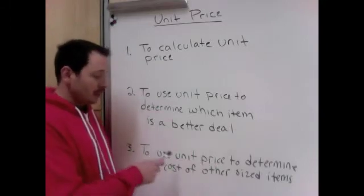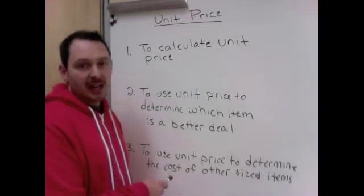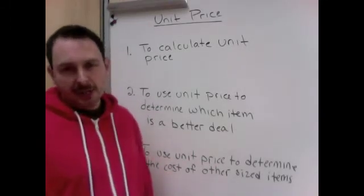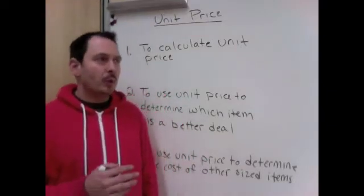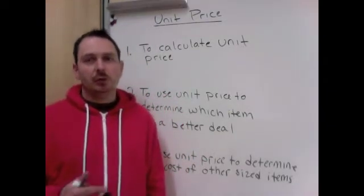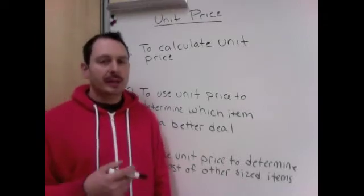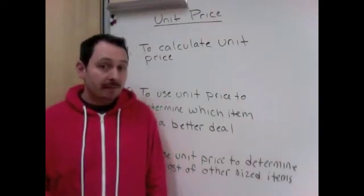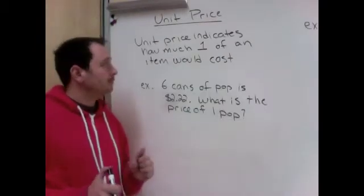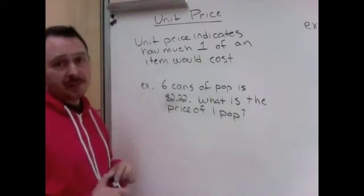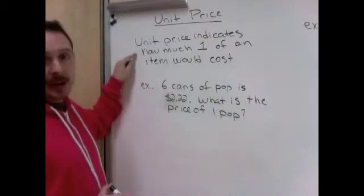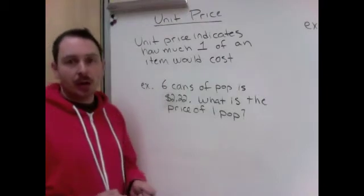And third, to use unit price to determine the cost of other sized items. So if you know how much it costs for 20 feet of 2x4s, how much would it then cost for 35 feet of 2x4s? Now let's use unit price. So first we'll need the definition. Unit price indicates how much one of an item would cost.